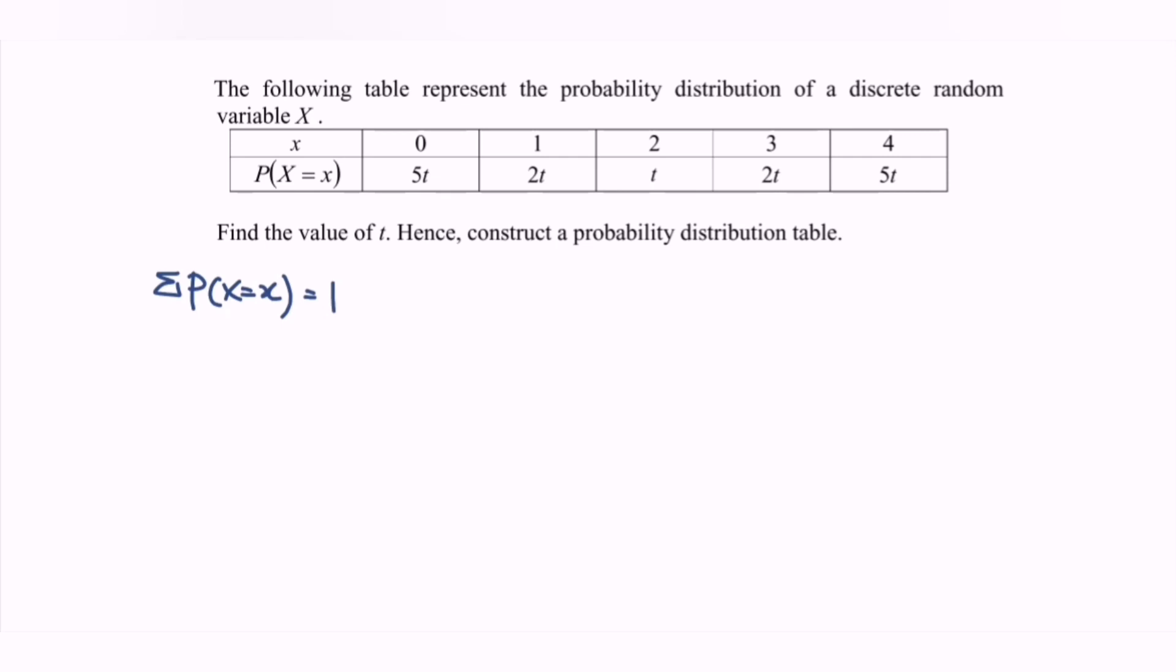So referring to the probability of the random variable, we have the summation. This means that what we have to do is to add 5t plus 2t plus t plus 2t and finally 5t, which is equal to 1.